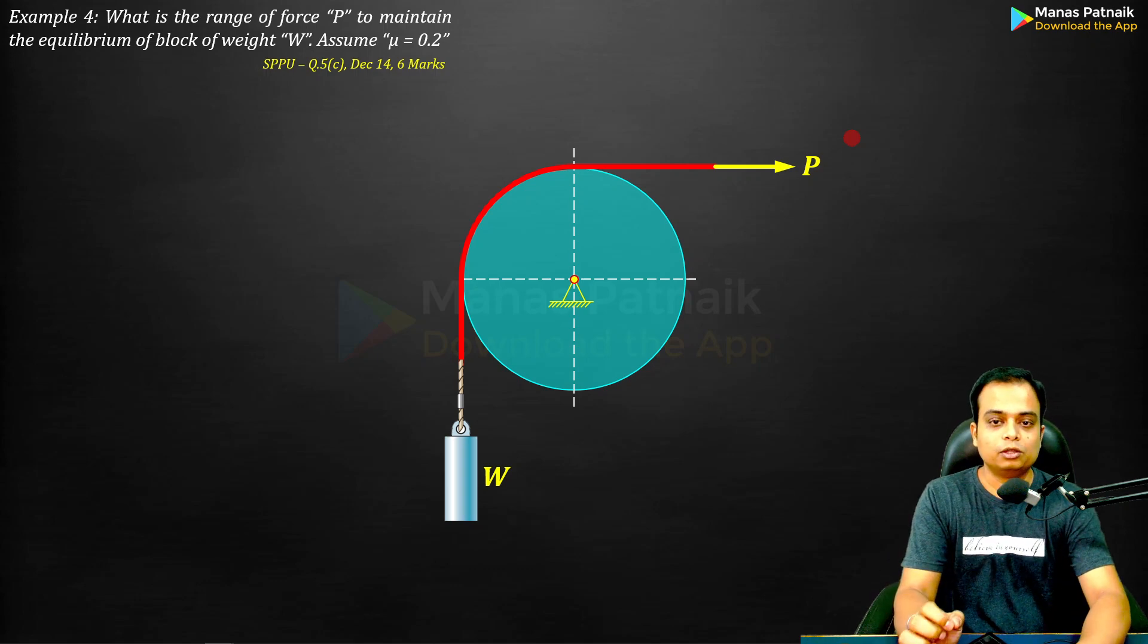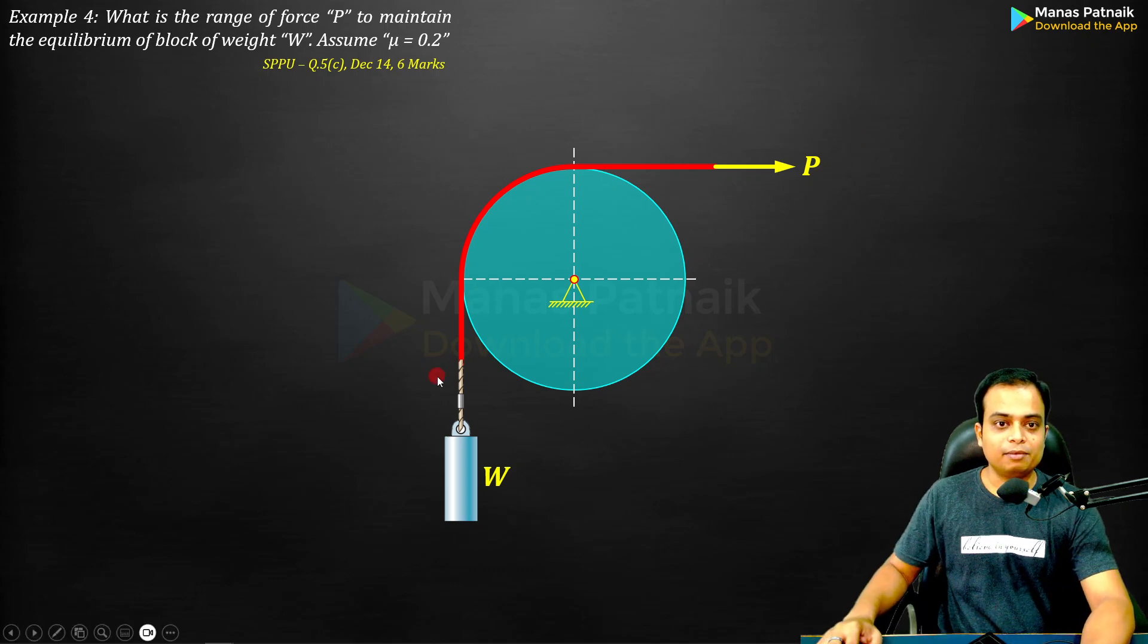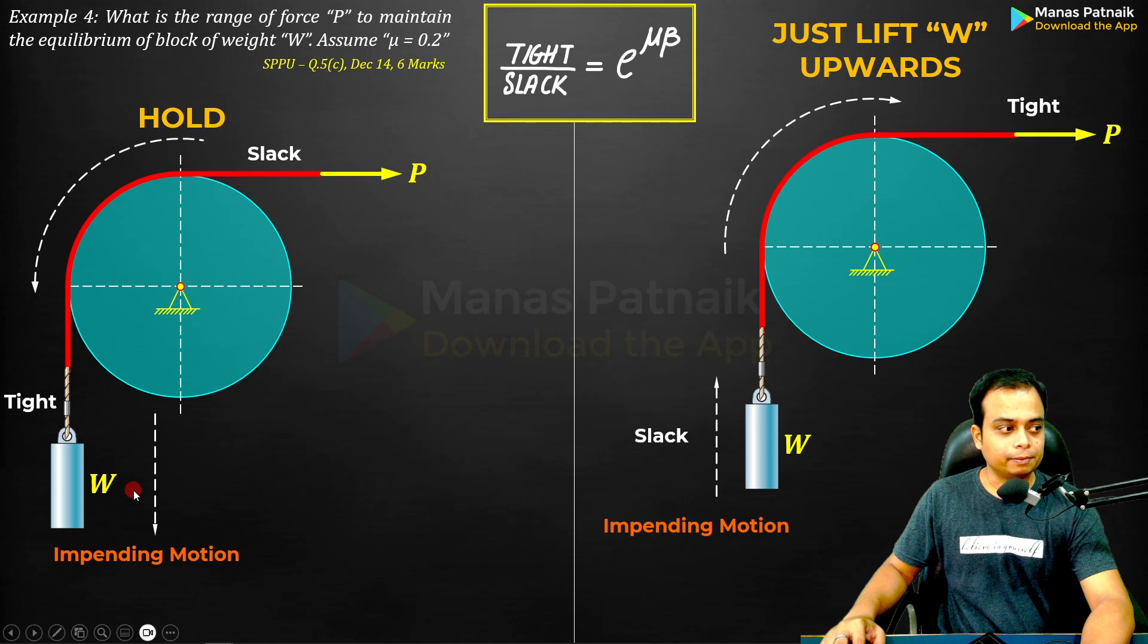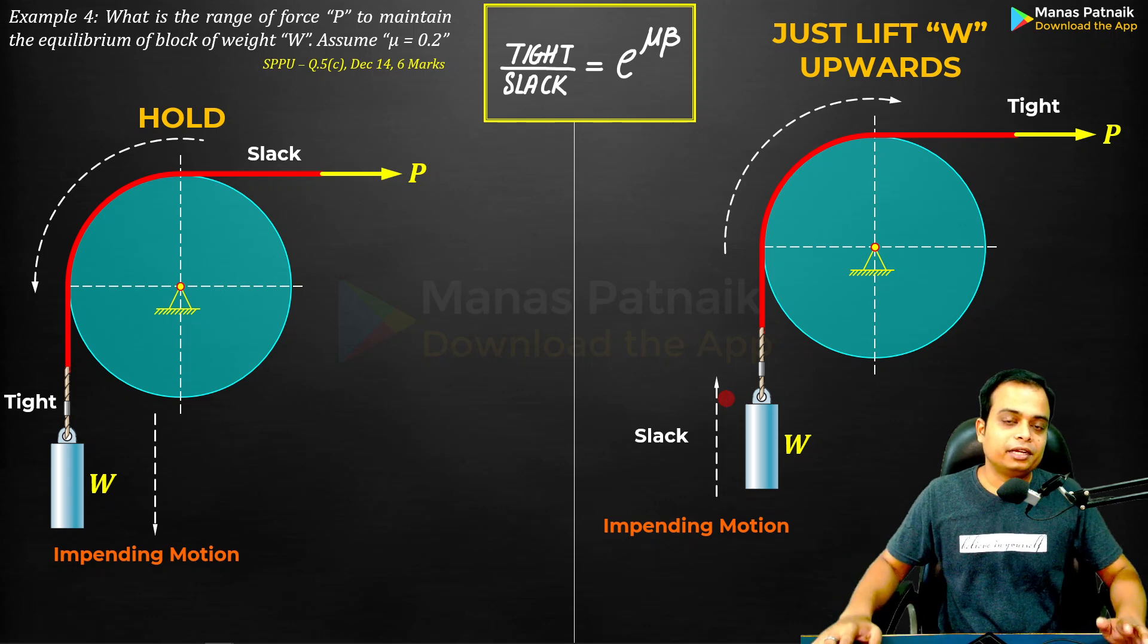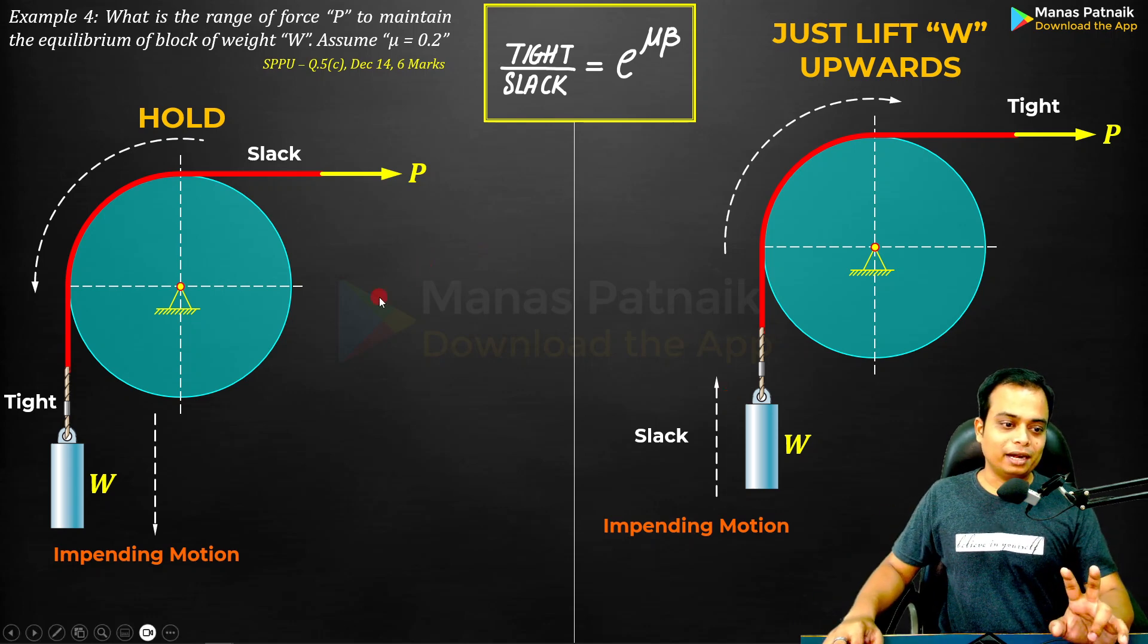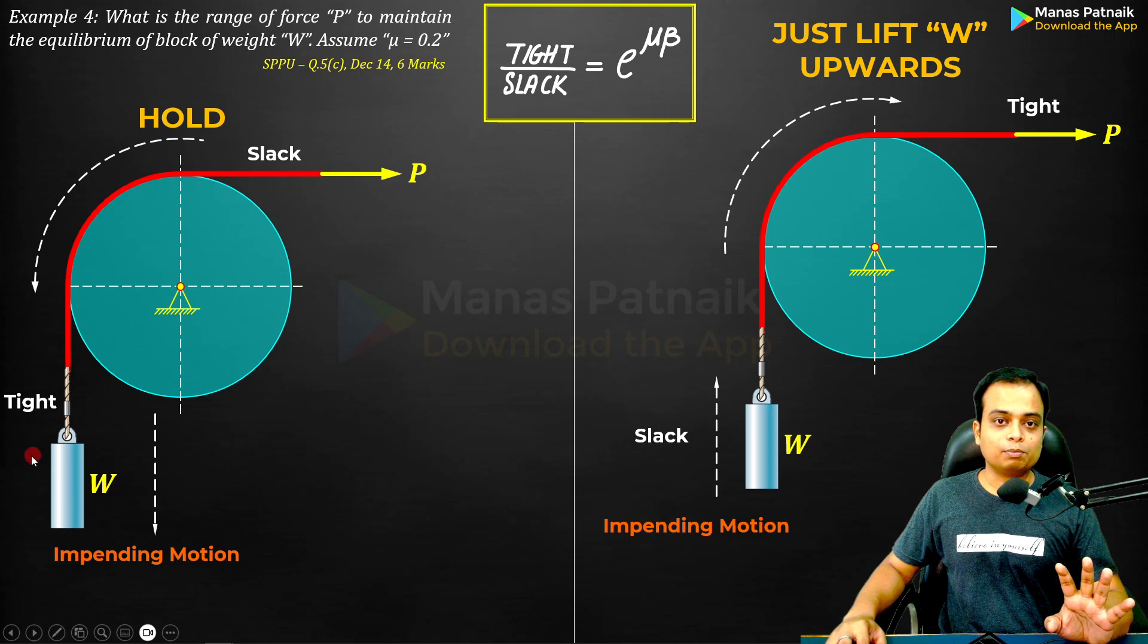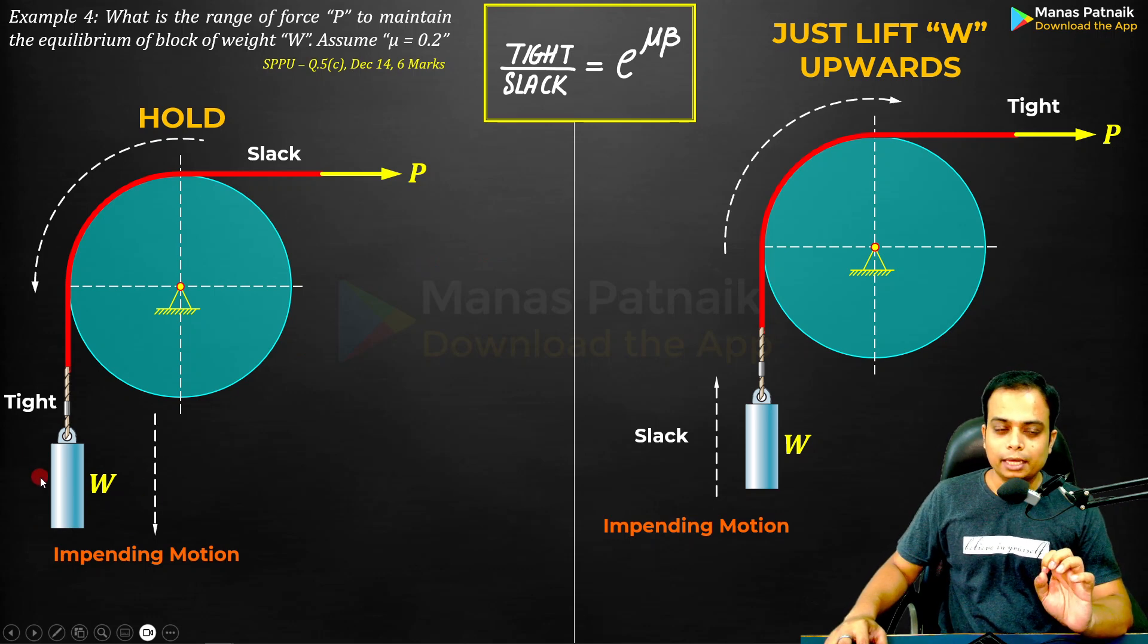Those two parts are where the impending motion is in the downward direction, and where the impending motion is in the upward direction. What I exactly mean to say is we have split up the question into two different cases. One is where we want to hold this block W in equilibrium.